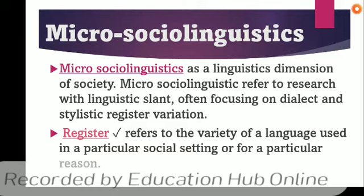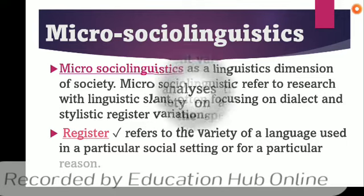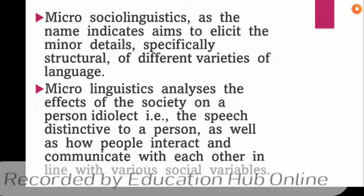We also have dialects, accents, jargons, registers, styles — all of these variations. Register refers to the variety of a language used in a particular social setting or for a particular reason. Microsocial linguistics, as the name indicates, aims to elicit the minor details, especially the structure of different varieties of language.